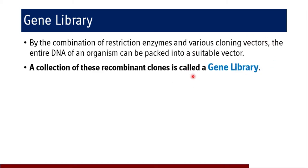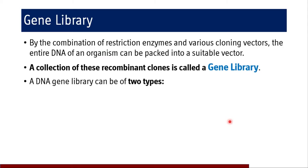A collection of these recombinant clones is called a gene library — so it is the collection of clones, not restriction fragments. When recombinant DNA is incorporated into cells via a vector and the cells are cloned, this collection of cloned cells is called a gene library. The gene library can be of two types: genomic library and cDNA library.